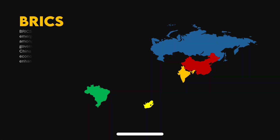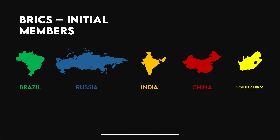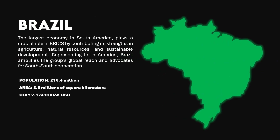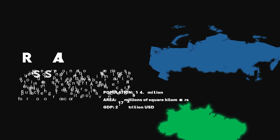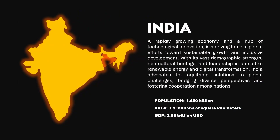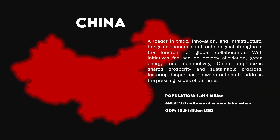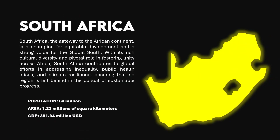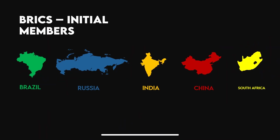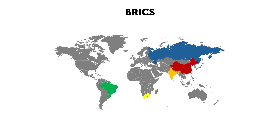Welcome back to Alam PowerPoint channel. In this video, I'll be showing you how to create this smooth glowing map animation effect in PowerPoint. It's very good if you want to do a presentation related to a world map that requires some of the countries to be shown. I use BRICS platform as an example. I like this style because it's very simple, it's looped, and it's also very easy to create.